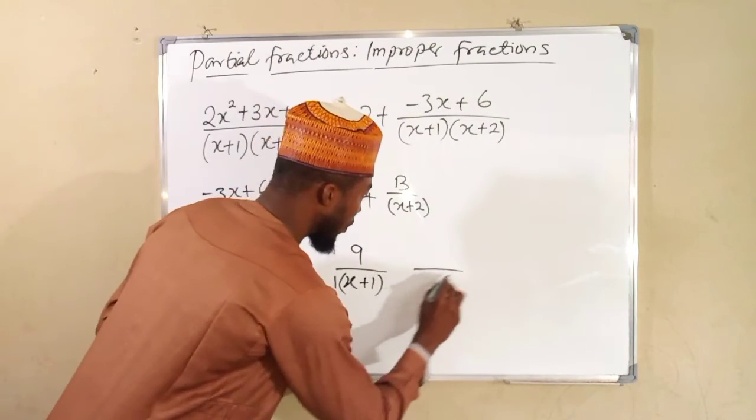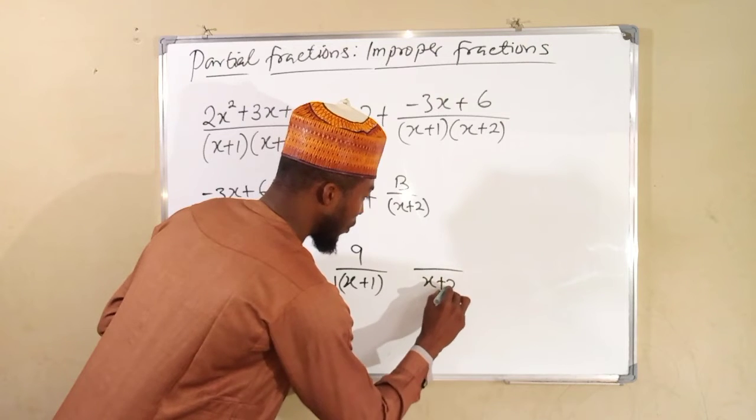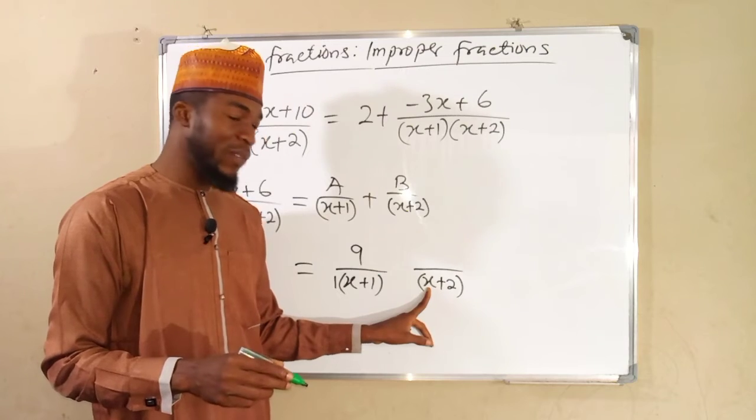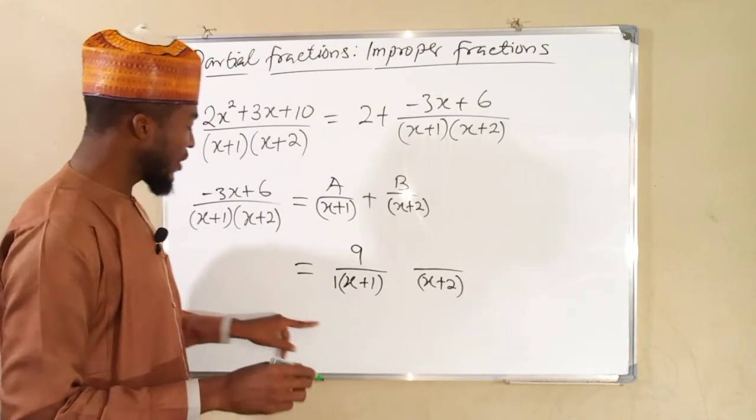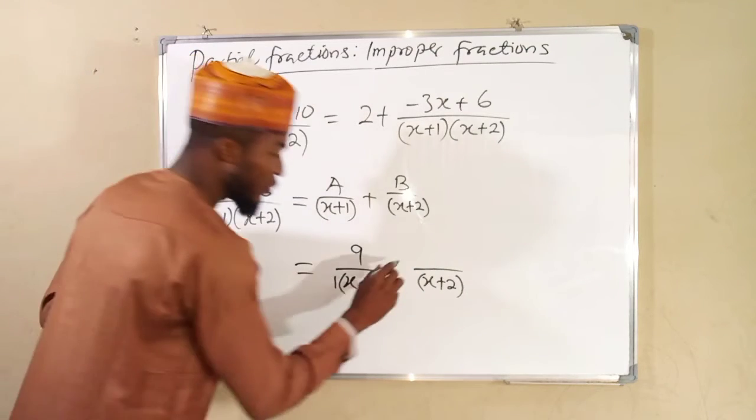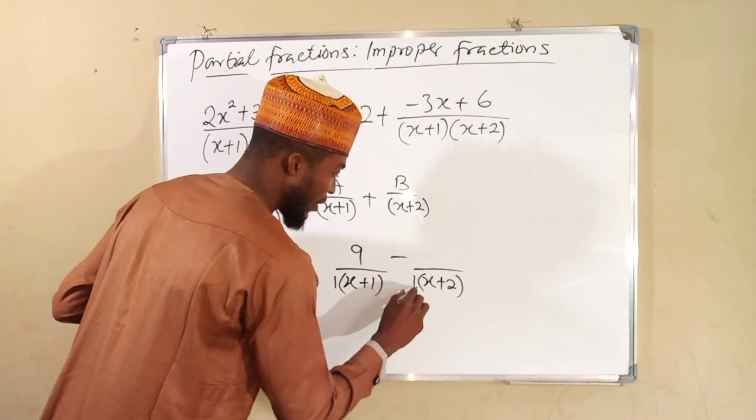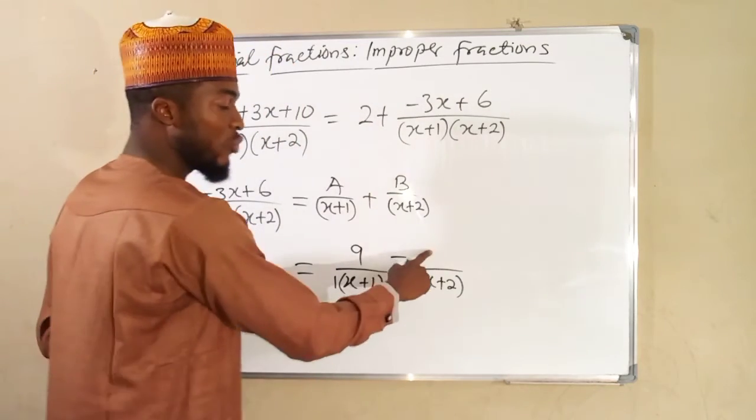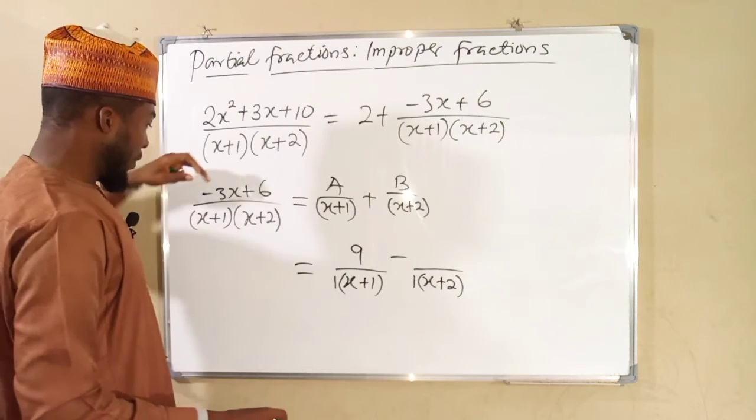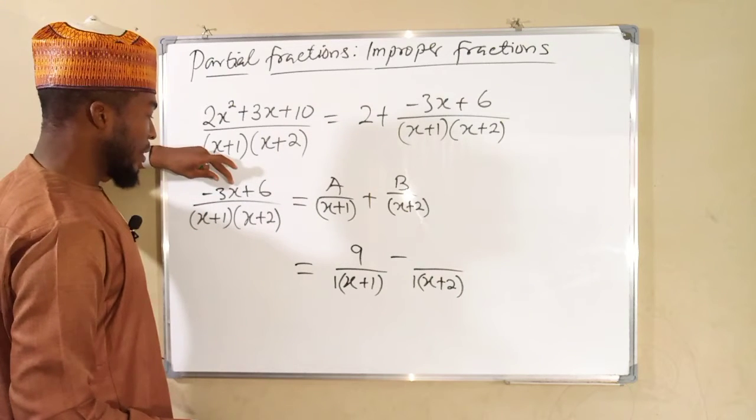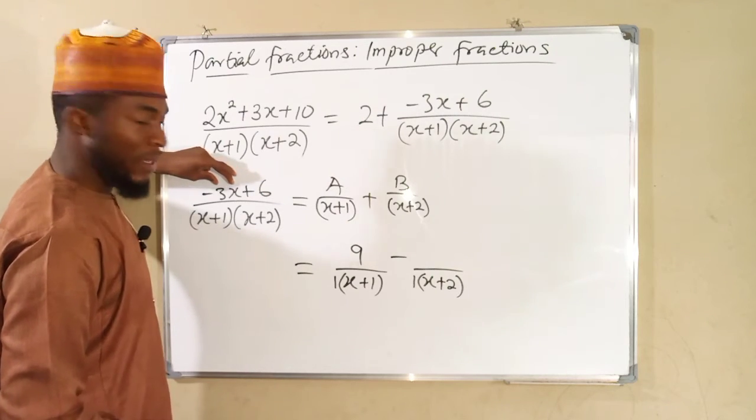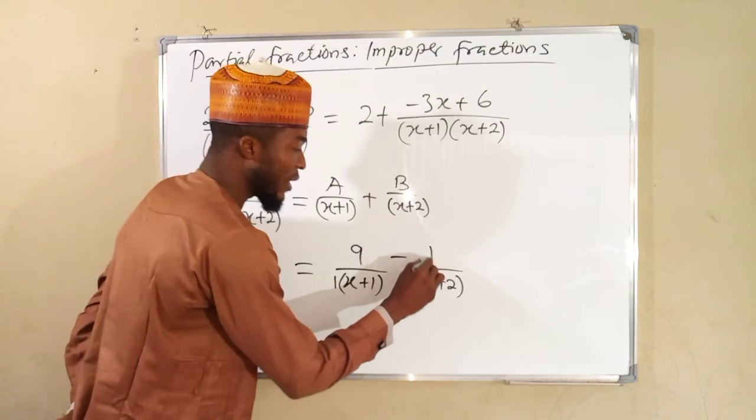Then we will move to the next factor, x plus 2. We want to transform it into 0. Therefore, we have to set the value of x to be equal to negative 2. And we are going to substitute that negative 2 into the other factor. Negative 2 positive 1 is negative 1. So we have our negative sign and we have our 1 here. Then to obtain the numerator, we are going to substitute that negative 2 to the top. Negative 2, negative 3 multiplying each other, we have positive 6. Then 6 plus 6 is 12. So we have 12 here.